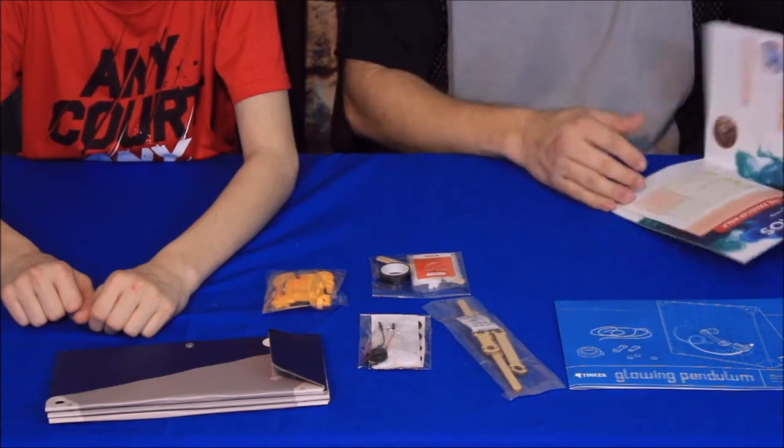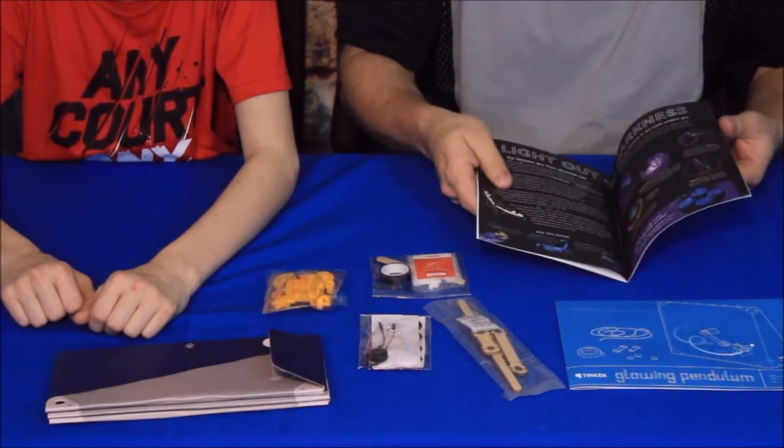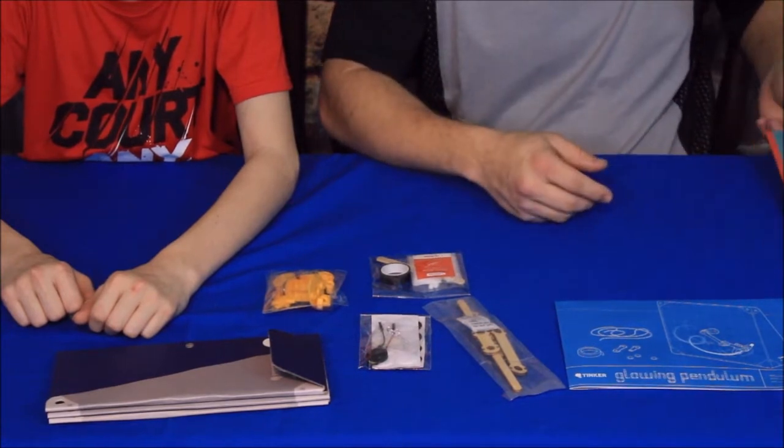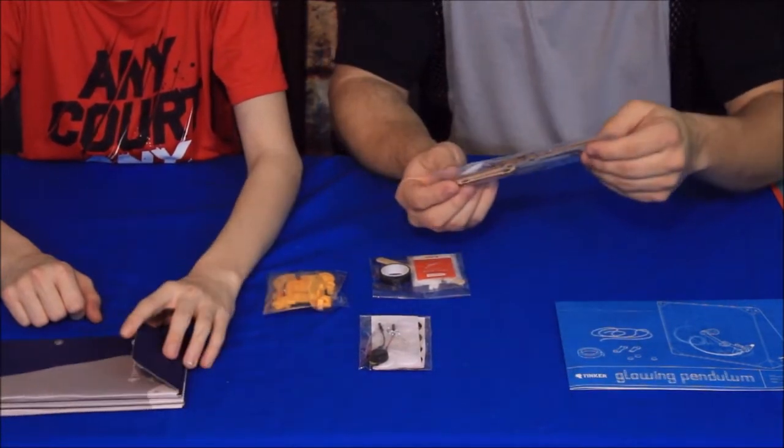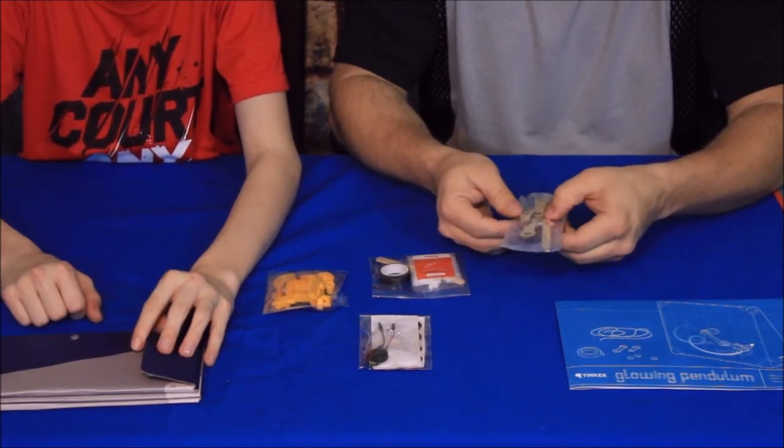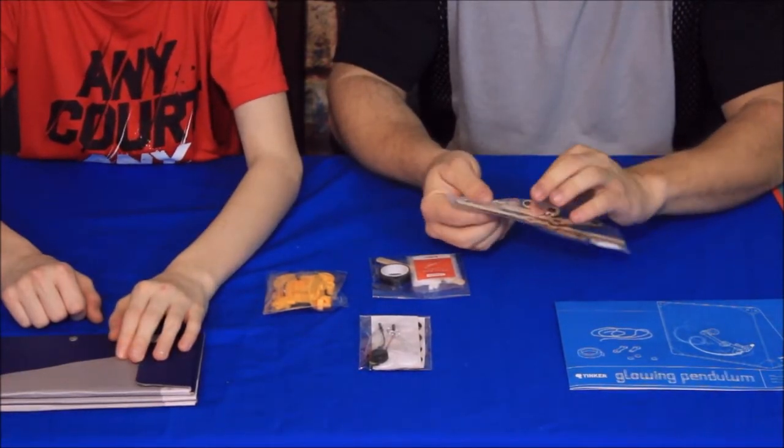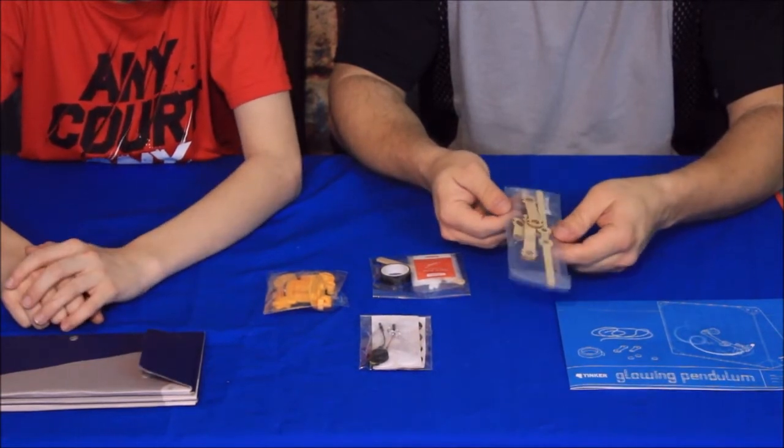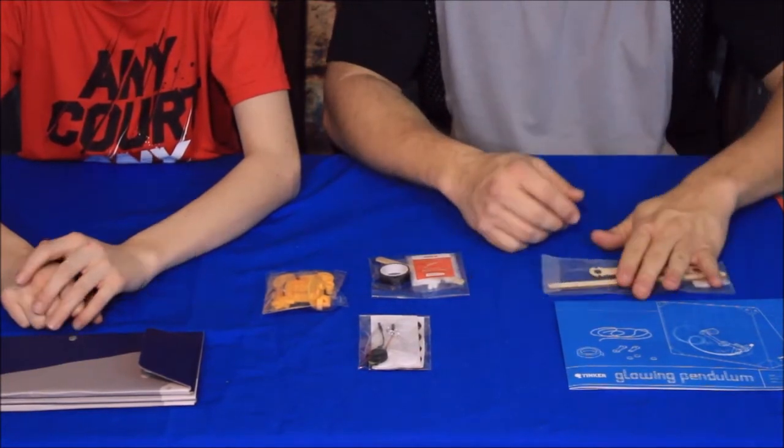The Tinker Zine here does have some various ideas and there are some additional things here towards the back that kind of give you simple experimentation as to what you can try beyond just this glowing pendulum. Now we'll go ahead with this piece here. We've got a few pieces. These are the laser cut laminated wood pieces.